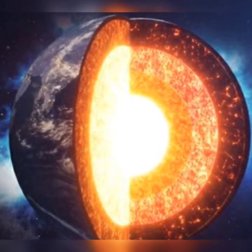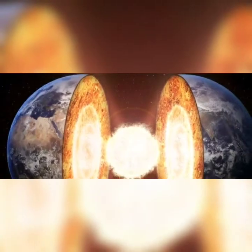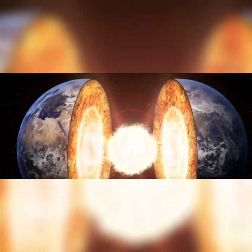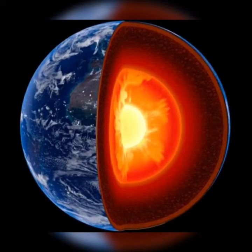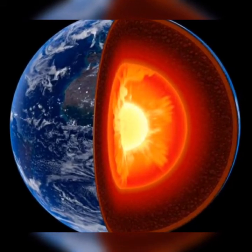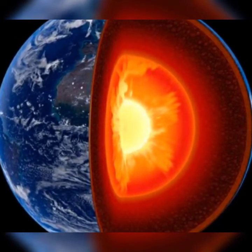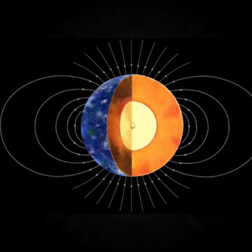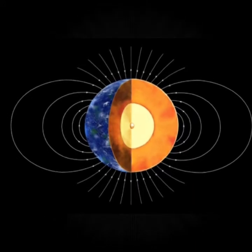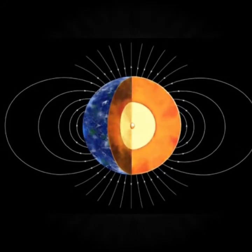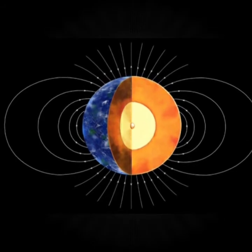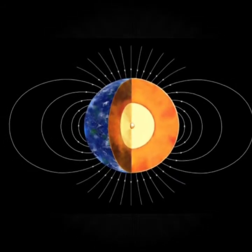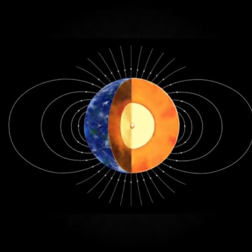Scientists believe that it is the core that is responsible for the earth's magnetic field. Because of the magnetic field, we are able to use our cell phones and our satellite dishes and things of that nature. The importance of the magnetic field is that it acts like a bubble, protecting the planet from charged particles floating around in the solar system, such as those from the sun.